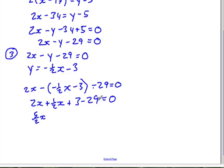And I know I'm skipping steps here, but you should be able to add fractions fairly easily now. So minus 26 equals 0. So we have to solve for x, and we're going to add 26 to both sides, so then 5x over 2 is equal to 26, and we're going to multiply both sides by 2 and divide by 5. In other words, we're going to multiply both sides by 2 over 5.